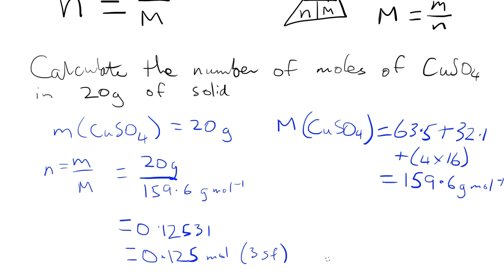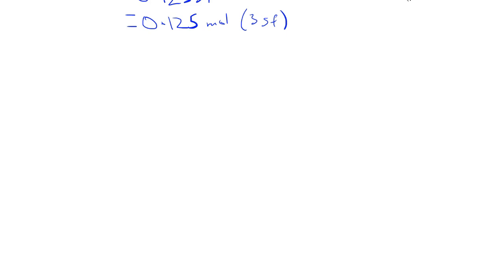We're now going to look at a different use of the formula. We're going to rearrange it and this time instead of calculating the number of moles, we're going to look at a question in which we already know the number of moles and we're going to use that to calculate the mass. We're going to calculate the mass of 0.25 mole of magnesium chloride which is MgCl2.